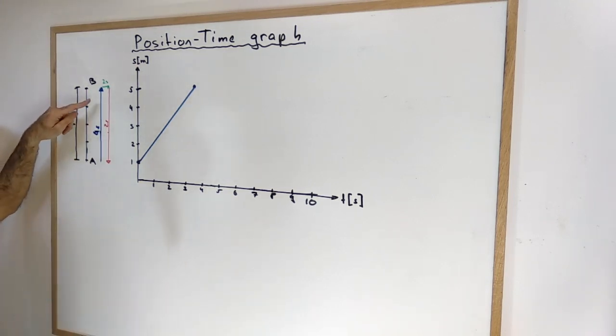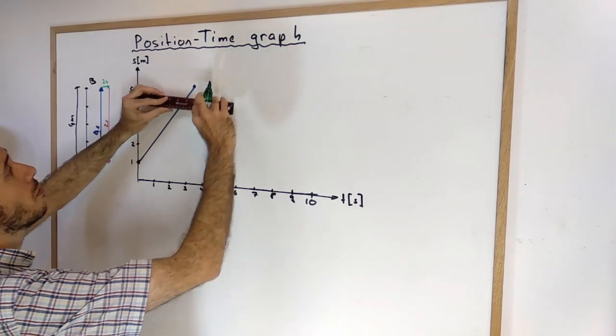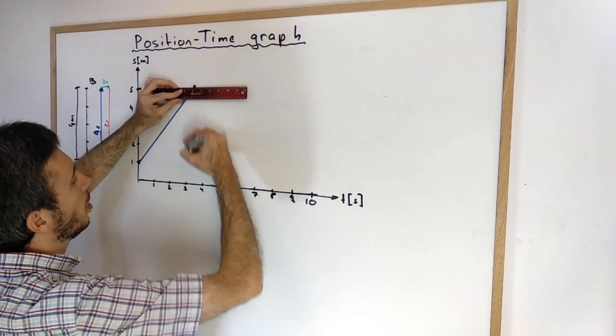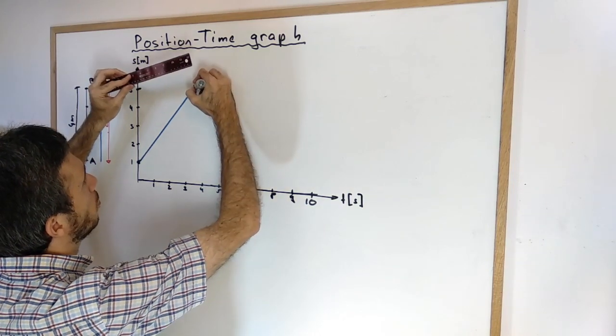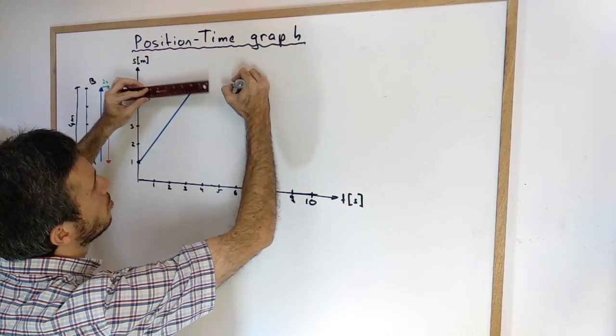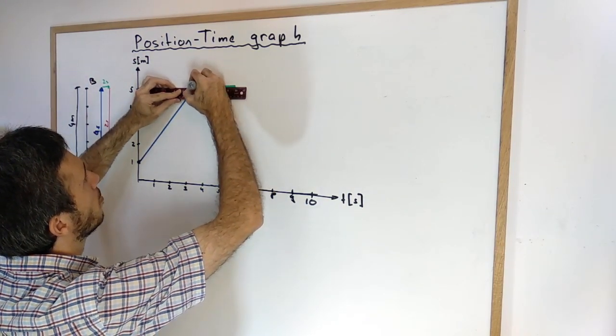Now if we continue with the movement here, let's assume after we reach point B, the object was staying at B for 2 seconds. So for 2 seconds, absolutely nothing was happening. We had 4 seconds here, then 5, 6, so 2 more seconds, absolutely nothing was happening, so the object remained at the same position.